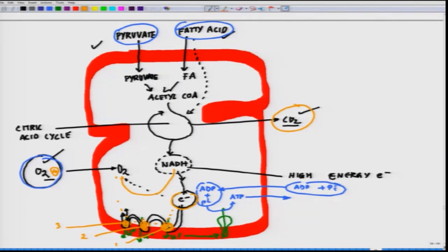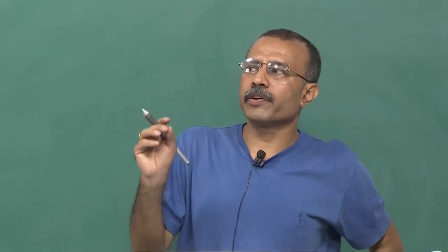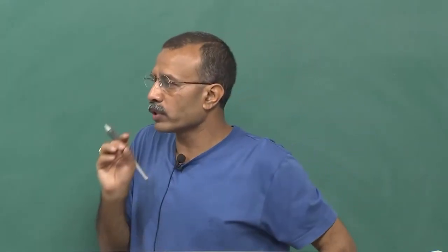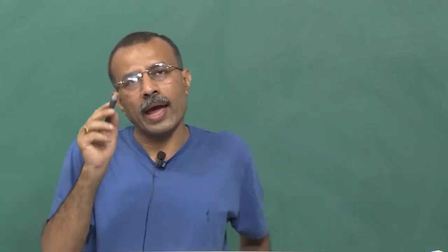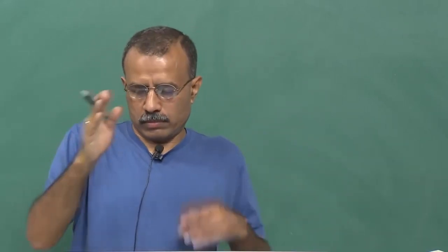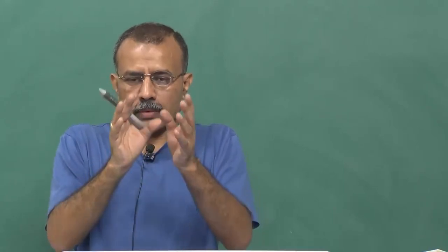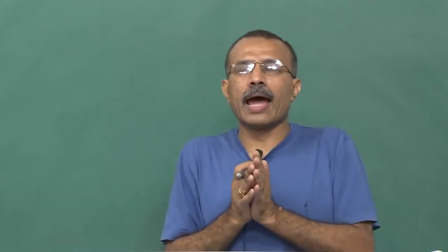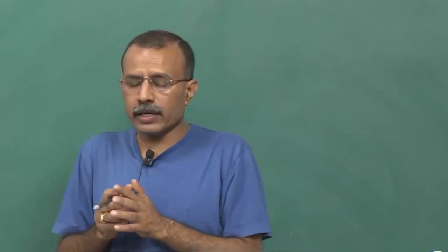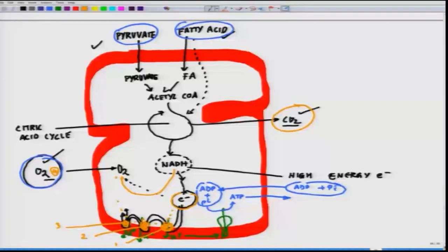If we arrange these complexes in terms of redox potential, we observe that each one of them, if this is the first, second, and third complex, each has more affinity than the previous one. Oxygen has the maximum affinity for the electron to be picked up. Each one of them has a higher potential to pull up the electron. The respiratory transport chain exactly follows the same module as in photosynthesis, where every protein complex has a different affinity for electrons.